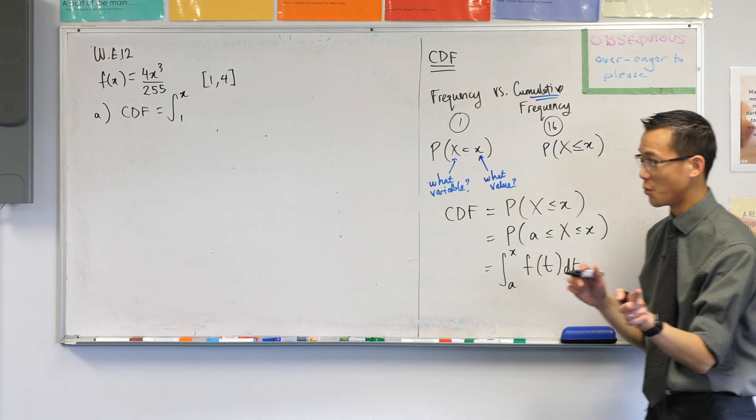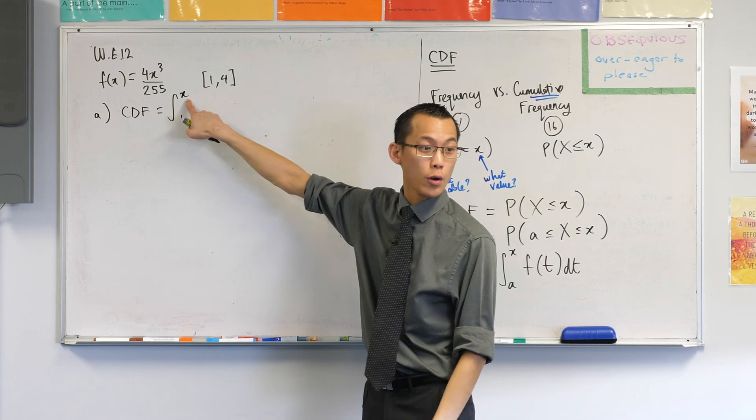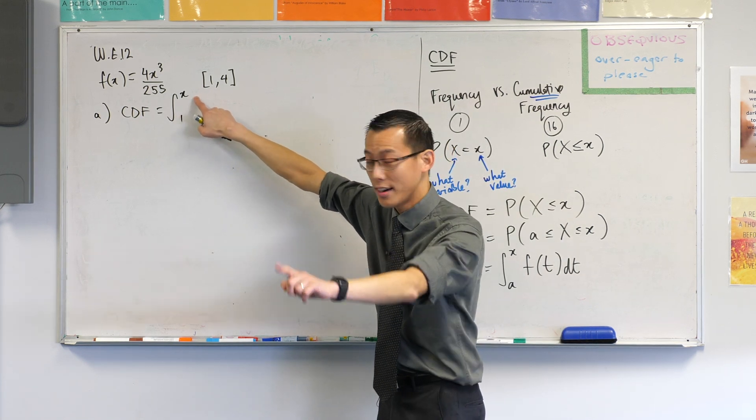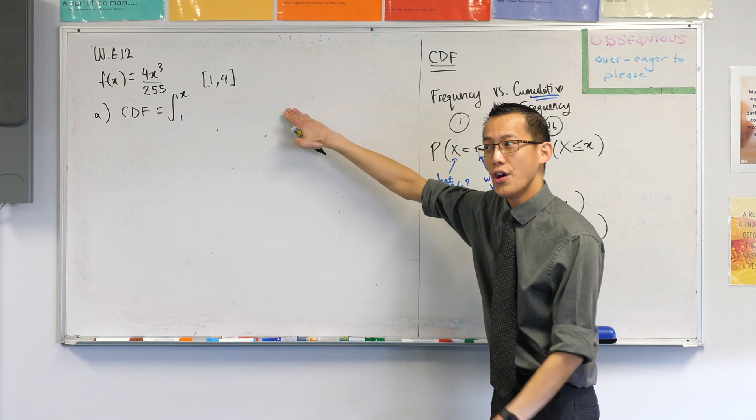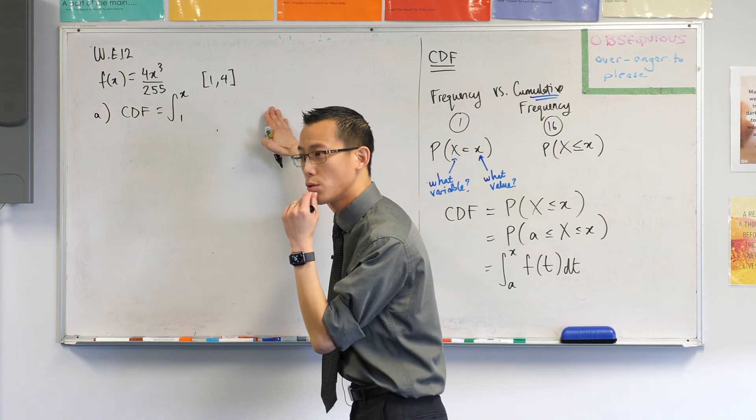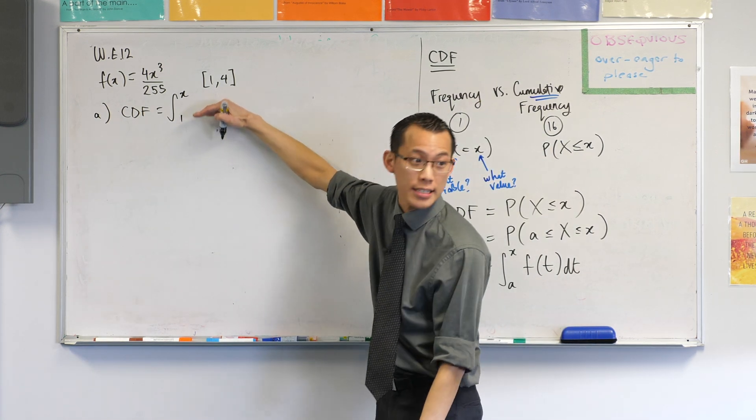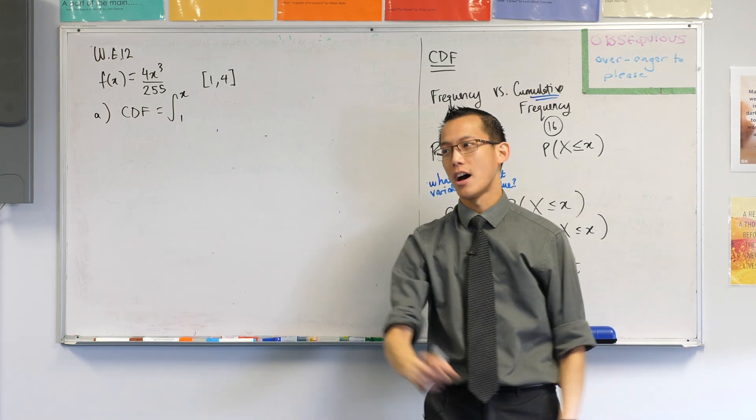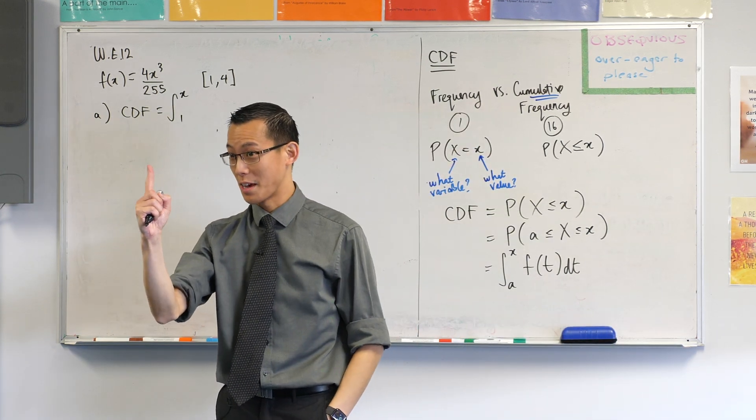Good question, why not 4? If I put 4 in here and then started to integrate, you already know what the answer will be. If I go from the start to the end and add all the probabilities, I'll just get 1.